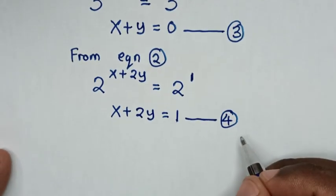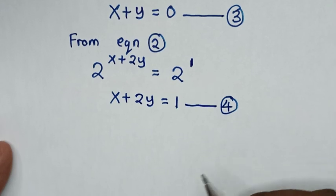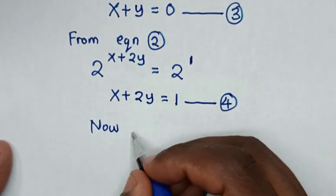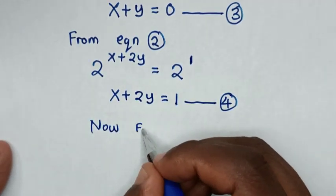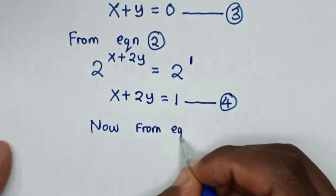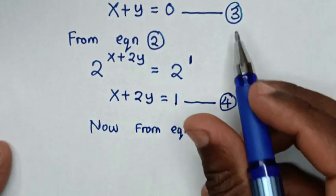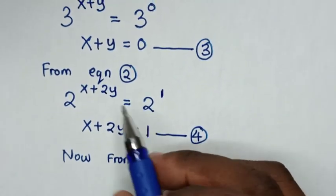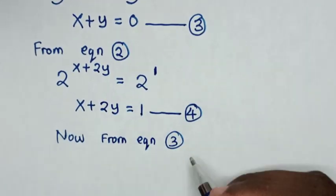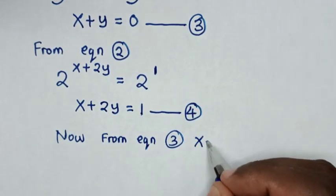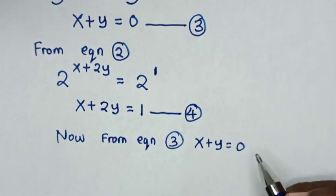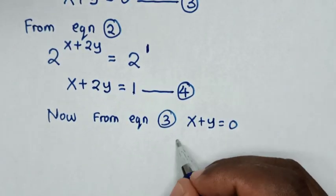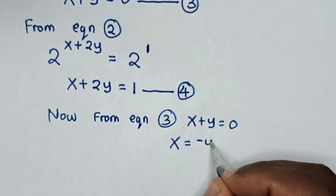Equations 3 and 4 form a simultaneous system. From Equation 3, which is x + y = 0, we take y to the right side, so it will be x is equal to negative y.